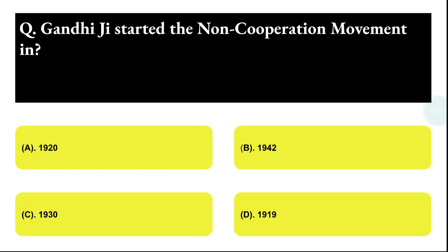Next question: Gandhi started the Non-Cooperation Movement in which year? Option A: 1920, Option B: 1942, Option C: 1930, Option D: 1919. The correct answer is option A, that is 1920.